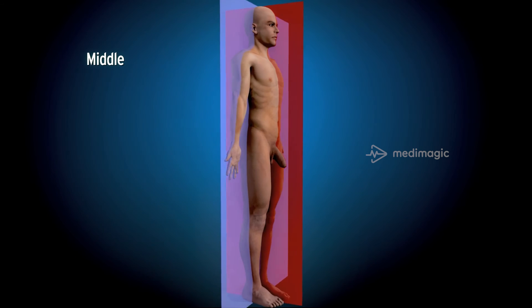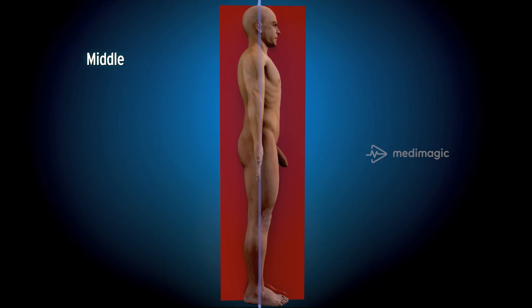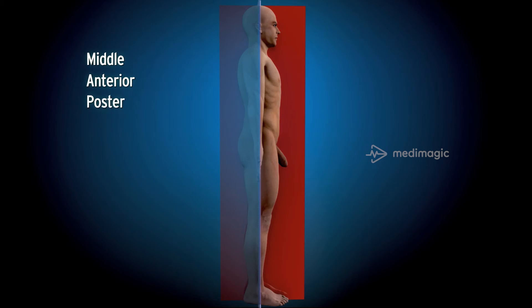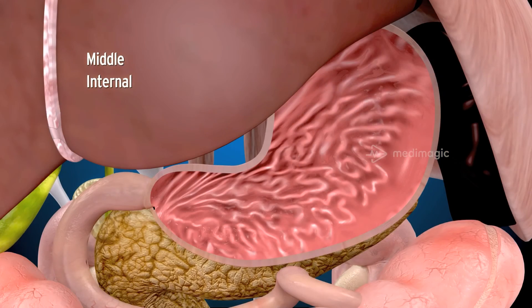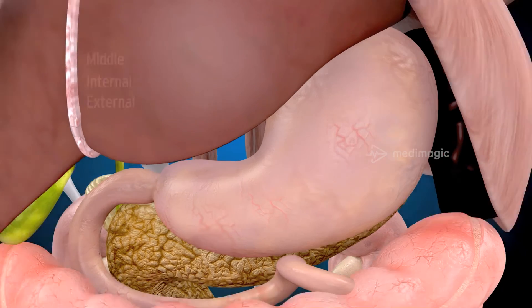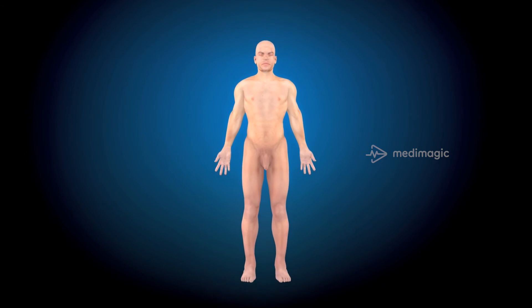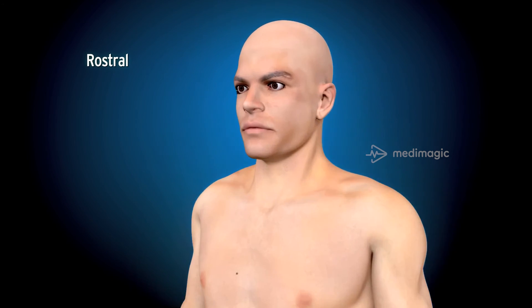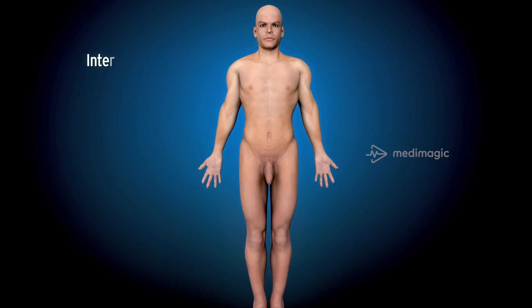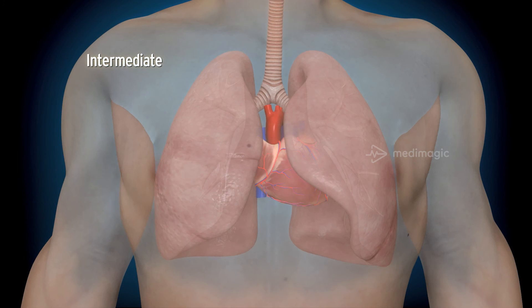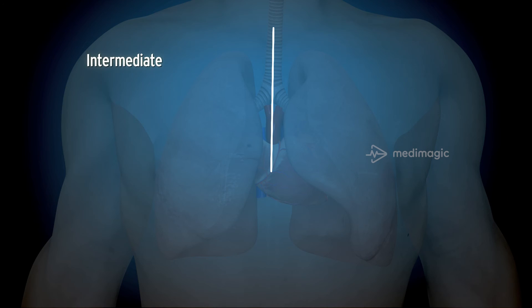Middle is the term used for a structure lying between two others — that are anterior and posterior, or superior and inferior, or internal and external. Rostral means cranial or cephalic. The term intermediate refers to lying between two structures, for example, the heart lying between the lungs.